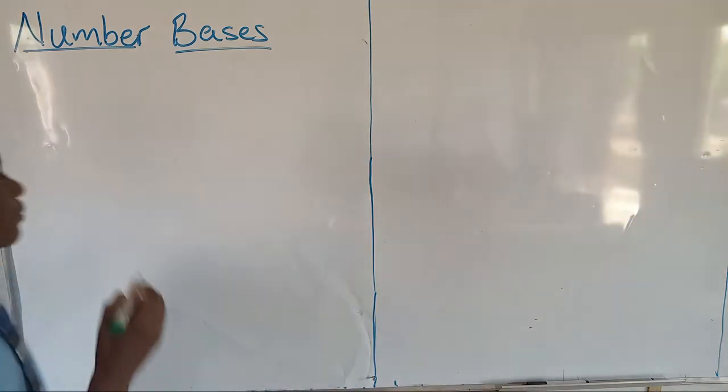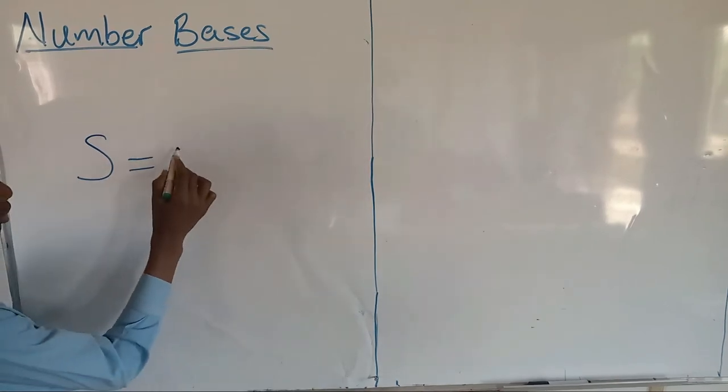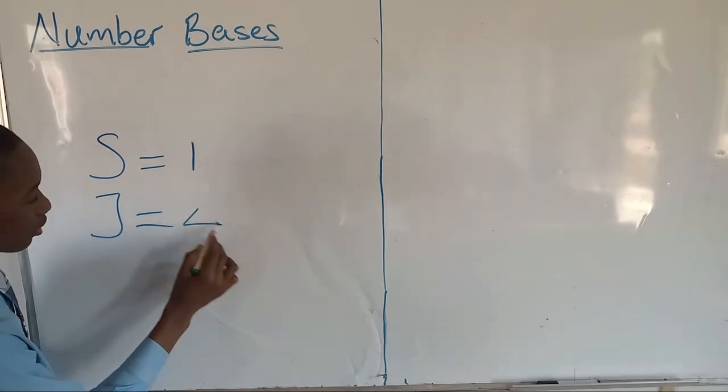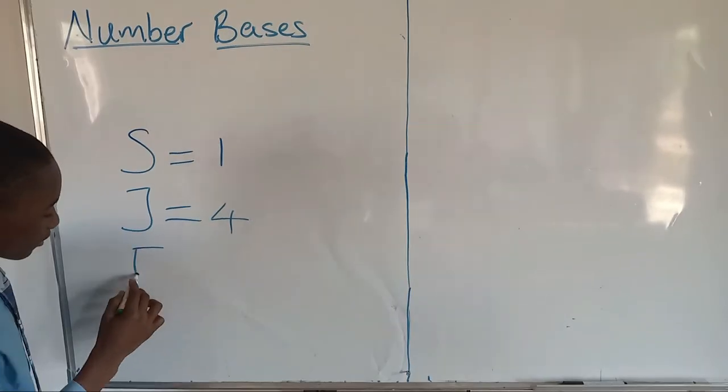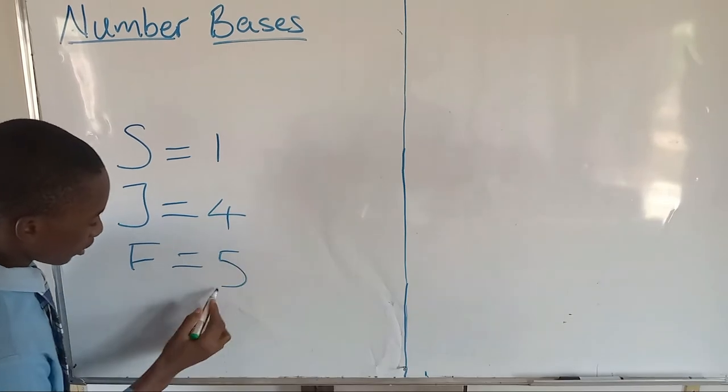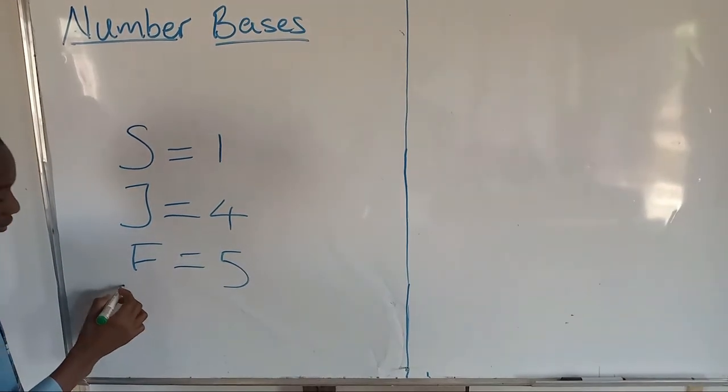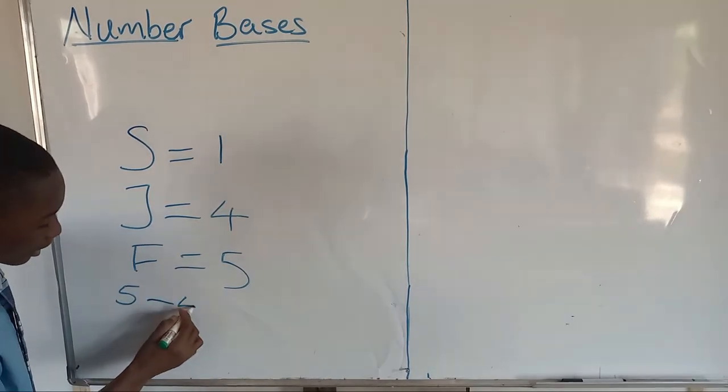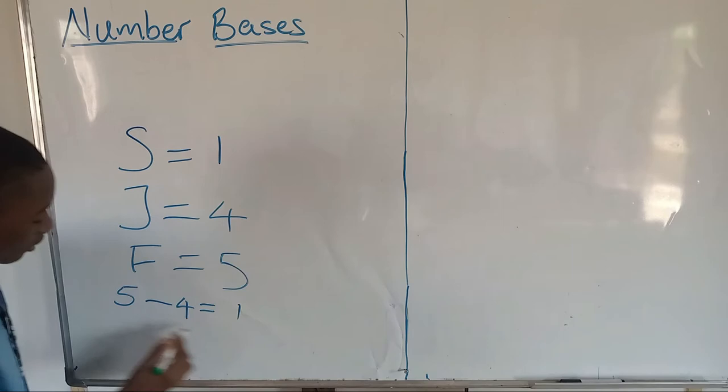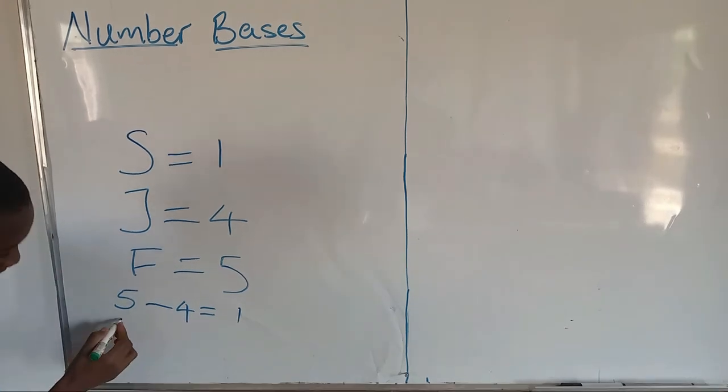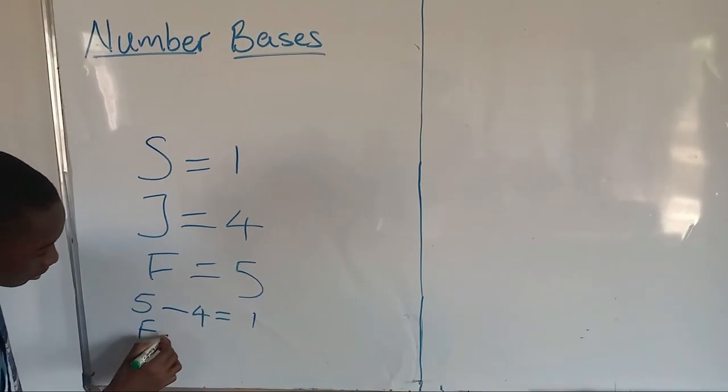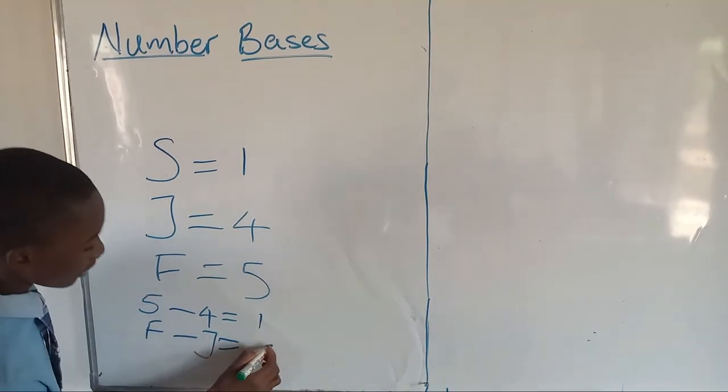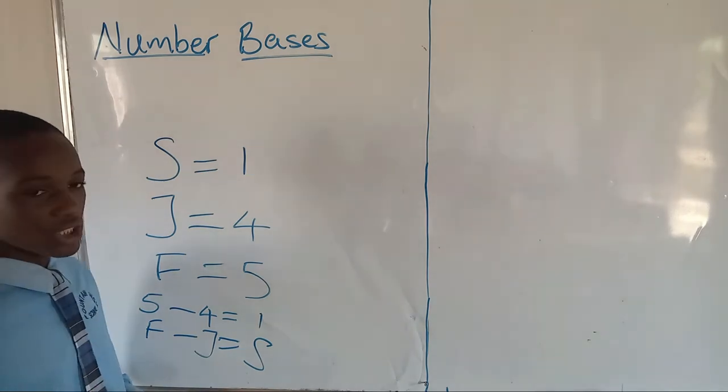So they drew out 30 different shapes and assigned numbers to them for them to use to count. For example, if S is equal to 1 and J is equal to 4 and F is equal to 5, it will be that if you have 5 cards and somebody took 4 cards, you will have 1 card, which is going to be represented as if you had F cards and somebody took J cards, you'll be left with S cards. So this is how it began.